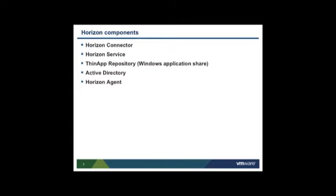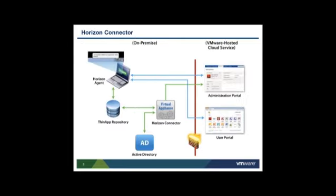These are the Horizon components. The Horizon Agent is installed on each user desktop and performs some of the most important functions in the Horizon environment. The Horizon Connector is a lightweight virtual appliance that you install on-premise for Active Directory synchronization and secure authentication of users to ThinApp packages. The connector is in OVA format, and you need a compatible hypervisor such as VMware vSphere to run the virtual appliance.